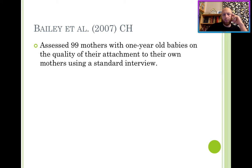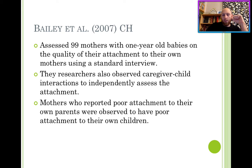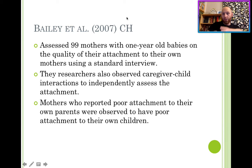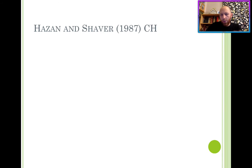Bailey carried out some really interesting research. 99 mothers were assessed with one-year-old babies on the quality of their attachment with their own mother, using a standard interview. The researchers then observed them interacting with their own children independently. Mothers who reported poor attachment with their parents were observed to have poor attachment with their children. This is evidence for the continuity hypothesis — that you have an insecure attachment style as an infant with your own parent, and you grow up feeding that insecure attachment into your own children. Evidence for the internal working model and the continuity hypothesis.